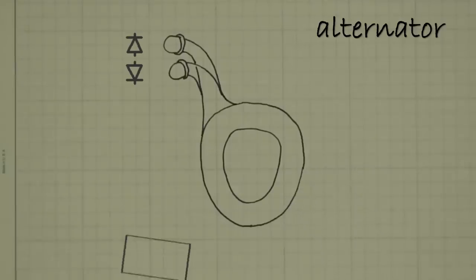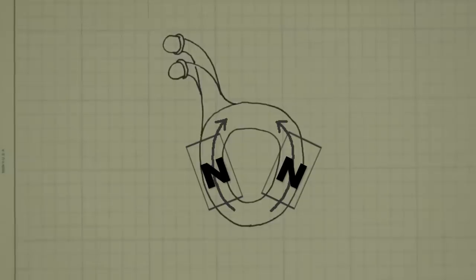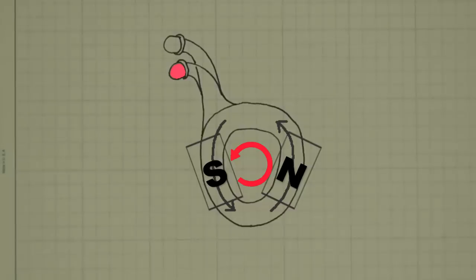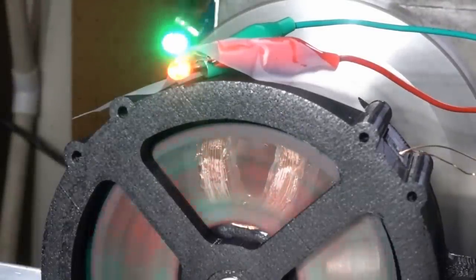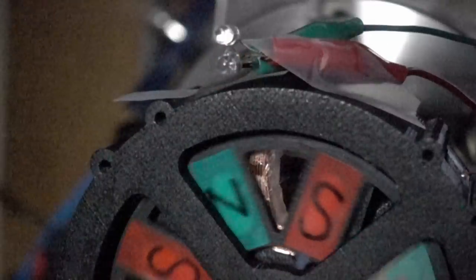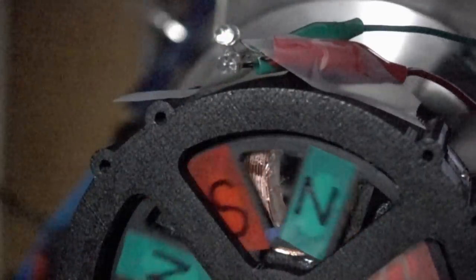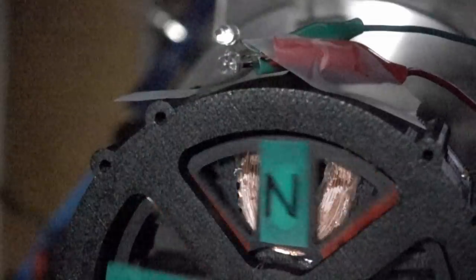But our alternator has more than one magnet. What happens when the next magnet comes along? If it's the same polarity as the first, it's going to oppose the current of the first magnet. To prevent that, we flip its orientation so it causes a downward current matching the upward current of the first magnet. In fact, if we slow down the footage we can see that's exactly what's happening. As long as we continue alternating the orientation of the magnets all the way around the alternator, everything works fine.